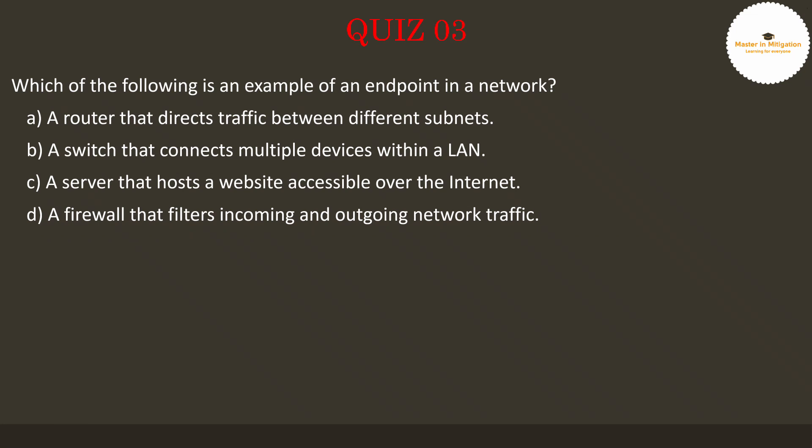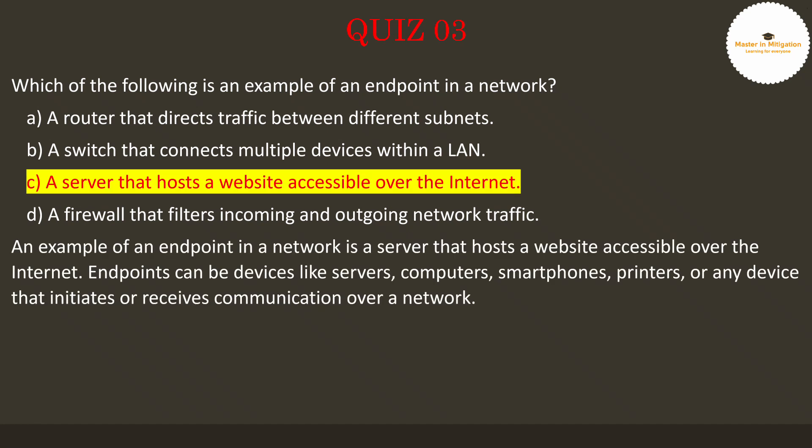Let's go to question 3. Which of the following is an example of an endpoint in a network? Pause the video now to select the best answer. The answer is C — a server that hosts a website accessible over the internet. Endpoints can be devices like servers, computers, smartphones, printers, or any device that initiates or receives communication over a network.